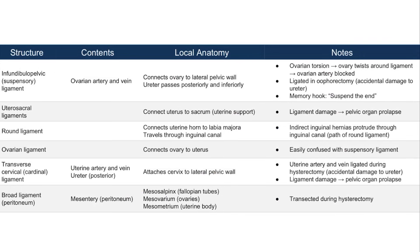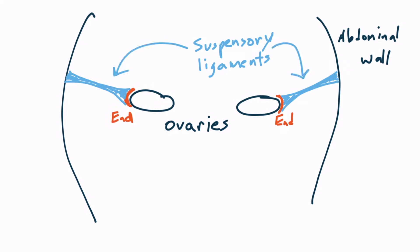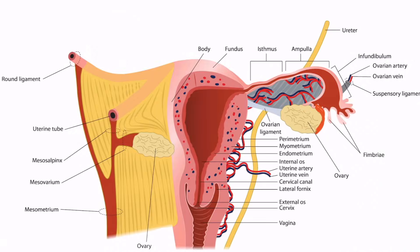To help you remember that the suspensory ligament connects to the end of the ovary to suspend it to the abdominal wall, I use the phrase 'suspend the end.' Here are the ovaries, and here are lines depicting the abdominal wall. The suspensory ligaments connect the ovaries to the lateral abdominal wall by connecting to their lateral ends — so suspend the end. Here's the end of the ovary, and the ligament connected to the wall is the suspensory ligament.